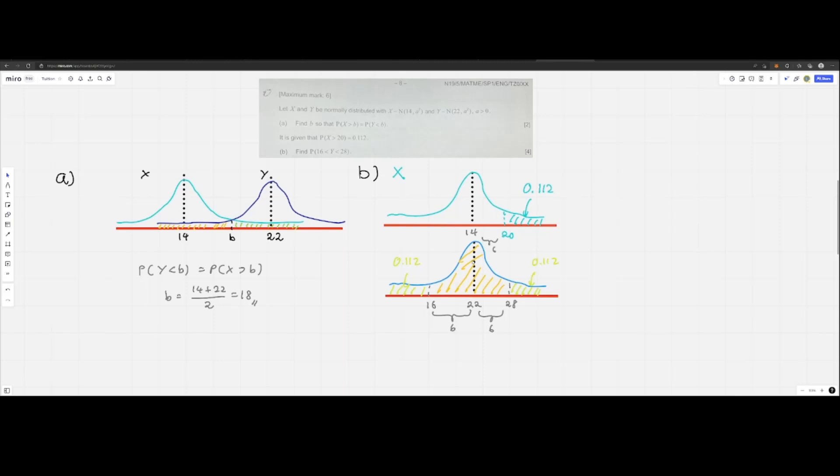simply becomes P(16 < Y < 28) = 1 - 0.112 - 0.112, where 1 is the total probability, minus the first green portion (0.112) and the second green portion (0.112). This gives us the answer 0.776. That's how we solve this question.